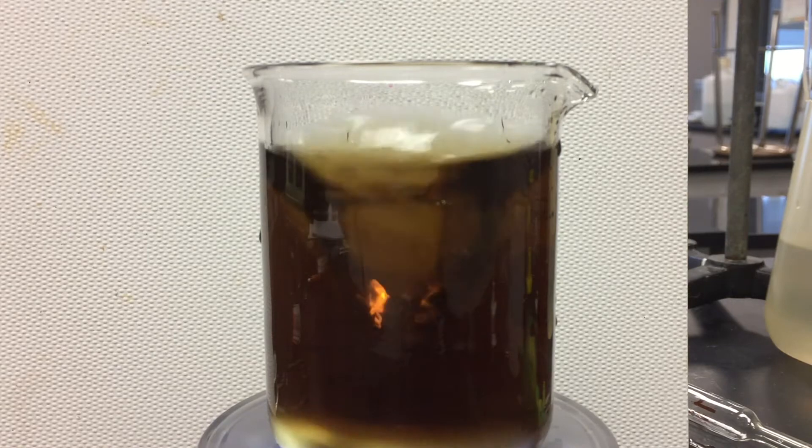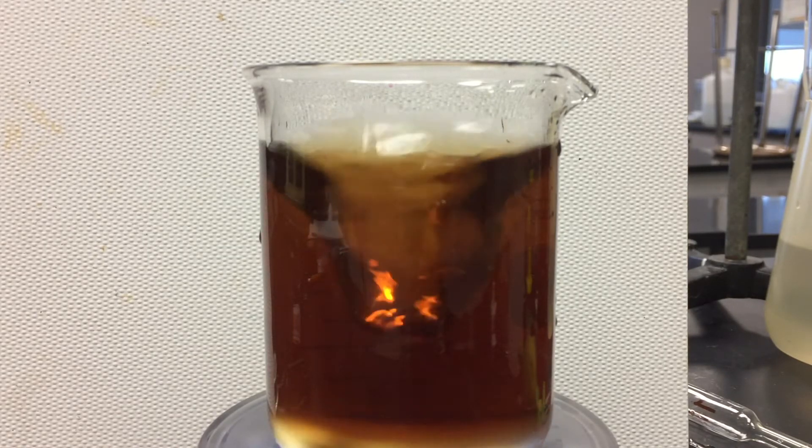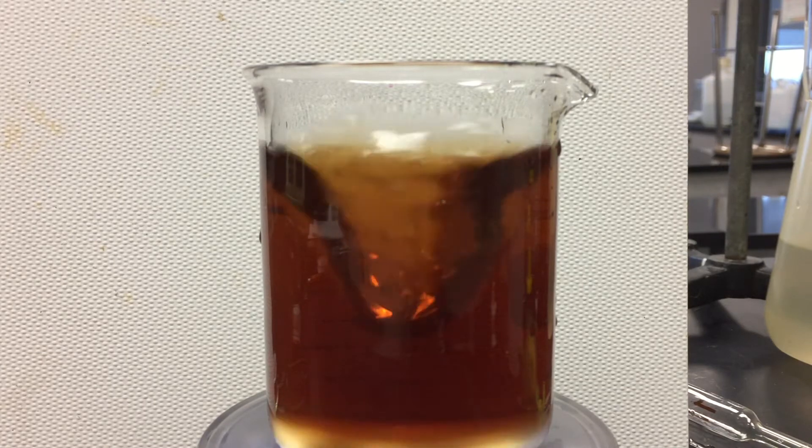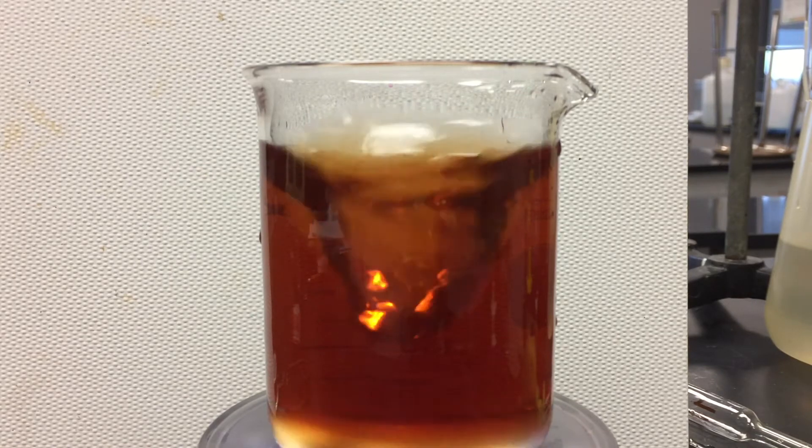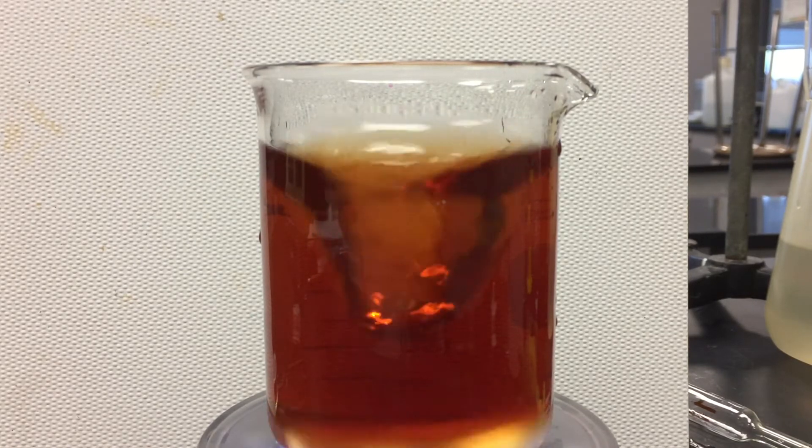If potassium hydra manganate is formed you will see a blue color with an oxidation state of plus 5. Finally, a yellow color is manganese with an oxidation state of plus 4.